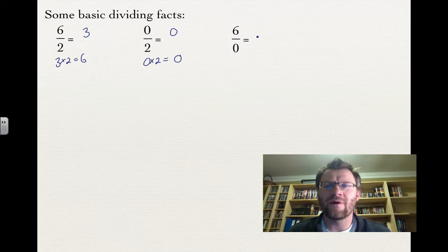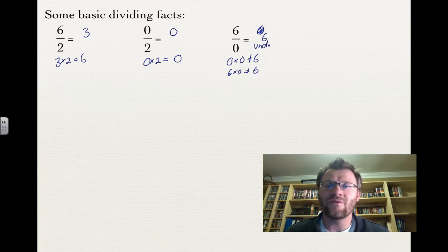How about 6 divided by 0 though? We can't say that answer is 0, although you might want to, but 0 times 0 does not equal 6. You can't say it's another number like 6, because 6 times 0 does also not equal 6. So what we call this is undefined, there is no answer to it.